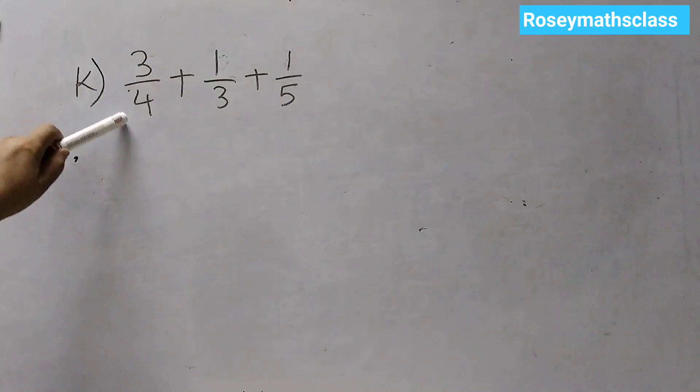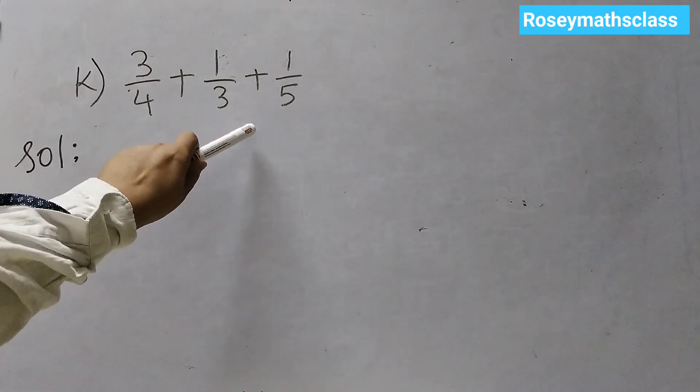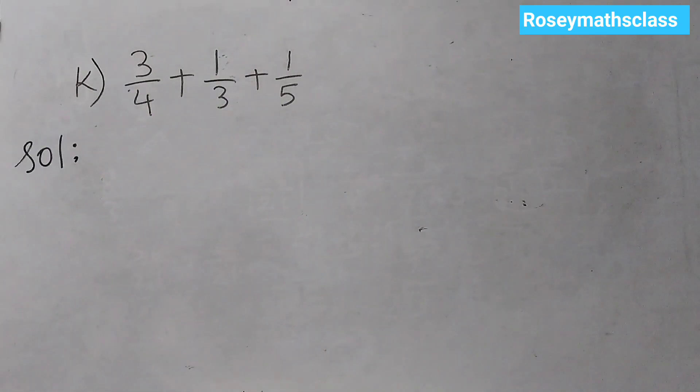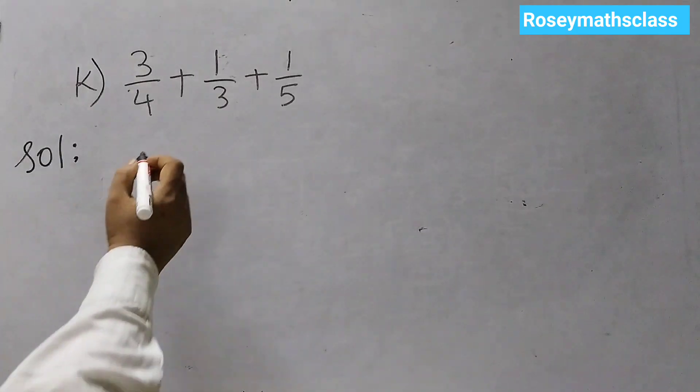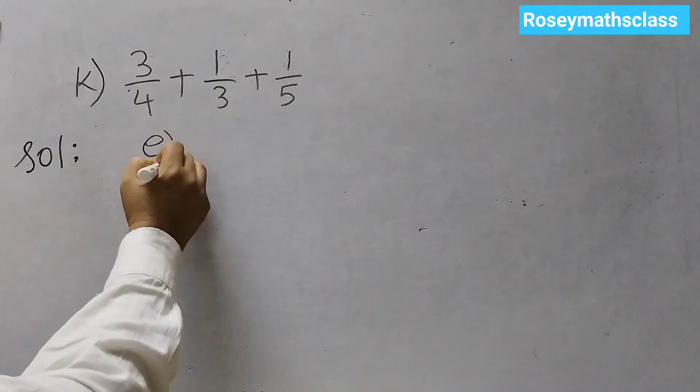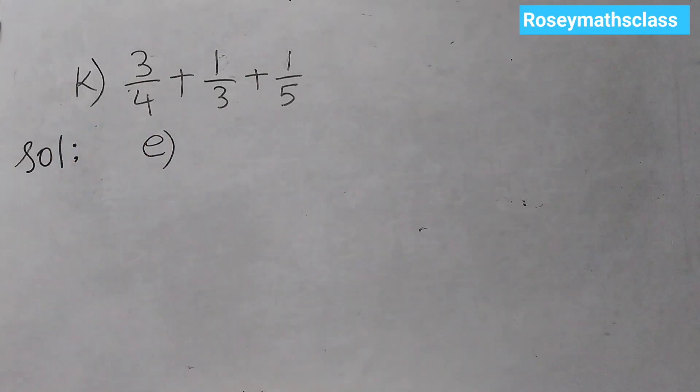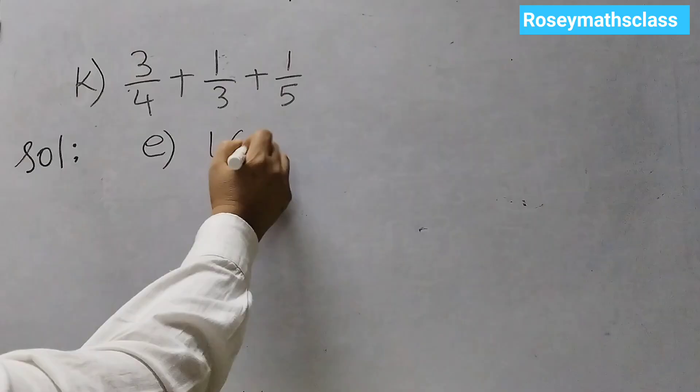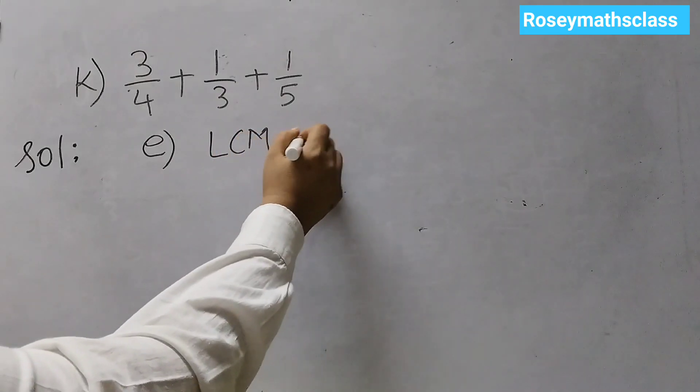Next problem is K. 2 by 3 plus 4 by 5 plus 3 by 7. Now, if you see question number E, question number E is exactly same as K. So, we have done this before in our previous video. So, you can go and watch it. And if you know how to do it, I will just give you the answer.